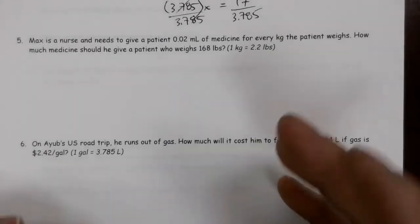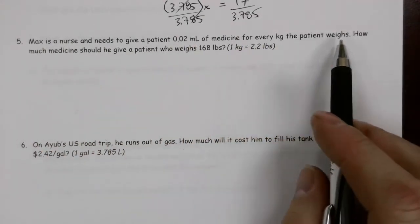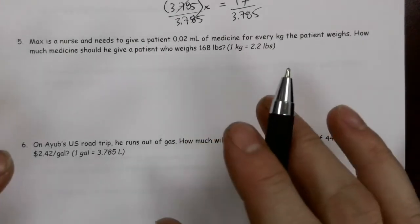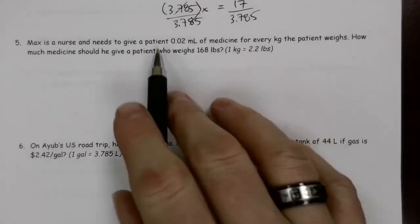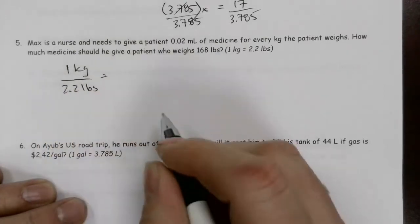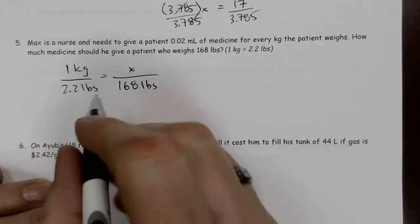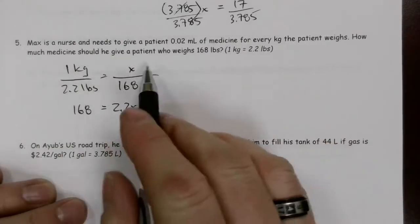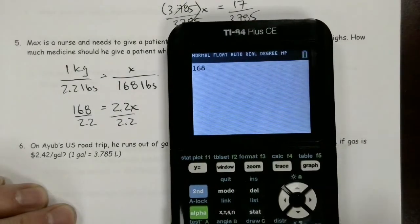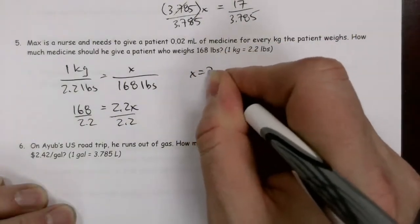A few questions that add context to it. Max is a nurse and needs to give a patient 0.02 milliliters of medicine for every kilogram the patient weighs. How much medicine should he give a patient who weighs 168 pounds? One kilogram is 2.2 pounds. There's two things going on here. We've got to first convert this into kilograms. Then we've got to figure out how much medicine the person is going to get. So one kilogram is 2.2 pounds. We know that the patient is 168 pounds. We don't know how many kilograms they are. We cross multiply. 1 times 168 is 168, and then we get 2.2 times x. We're going to divide by 2.2. So 168 divided by 2.2, and we're getting 76.36. X is 76.36 kilograms.